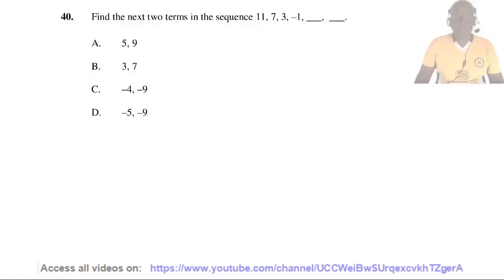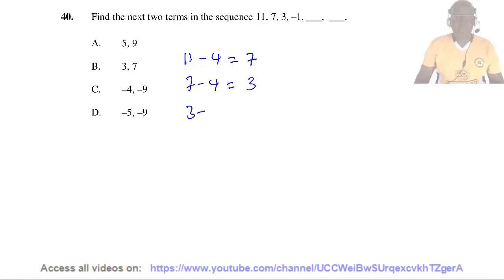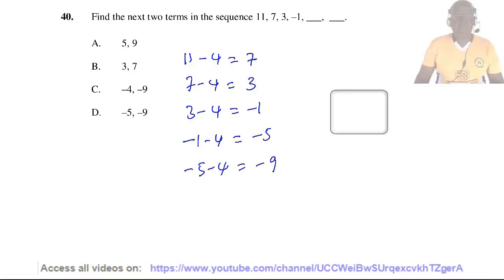Question 40. Find the next two terms in the sequence: 11, 7, 3, −1, __, __. In the sequence, each term decreases by 4: 11−4=7, 7−4=3, 3−4=−1. Continuing: −1−4=−5, and −5−4=−9. So the two missing numbers are −5 and −9. The answer is D.